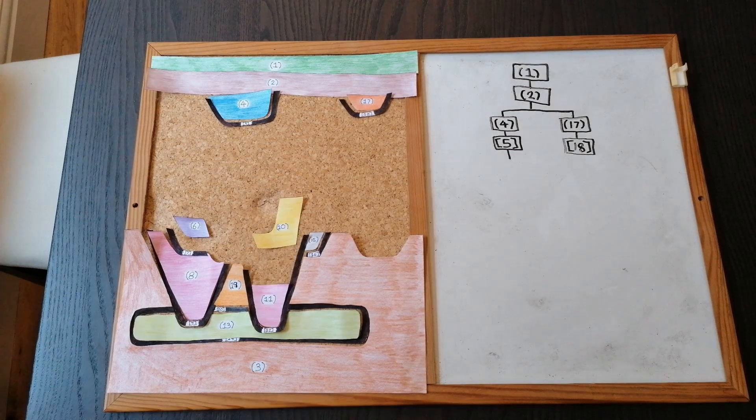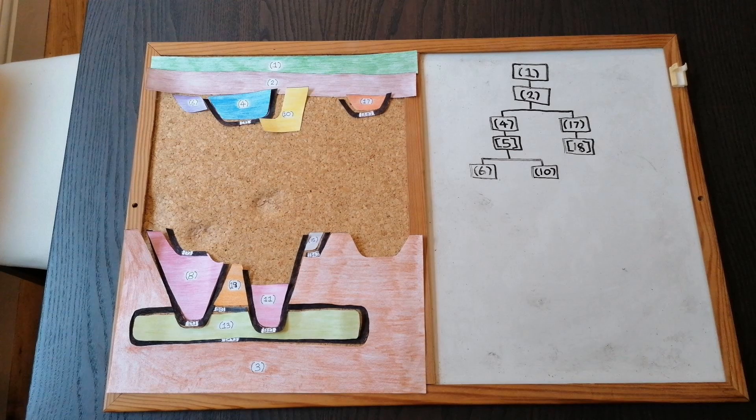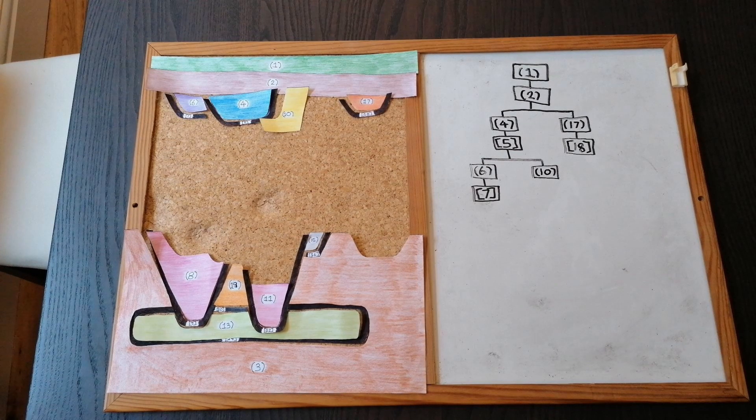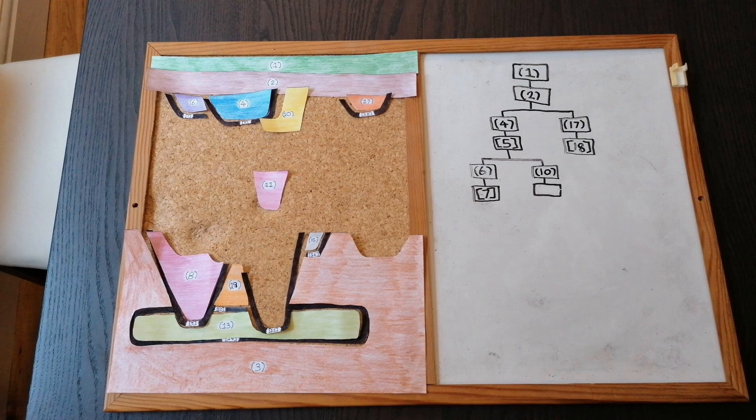Next up is 6 and 10. Again, because they are separate, we can't tell which one came first. So, our Harris matrix branches out again. 6 is then followed by 7. 10, however, is followed by another fill, 11, which is then followed by cut 12.